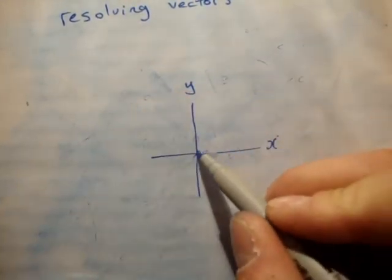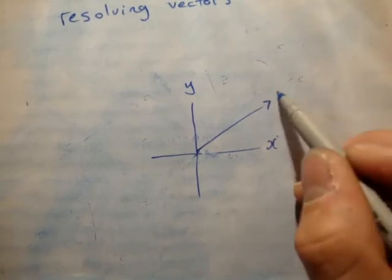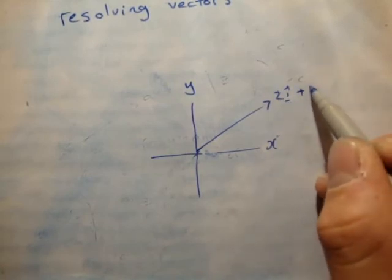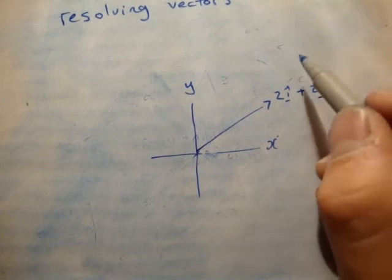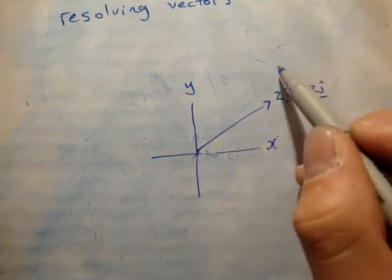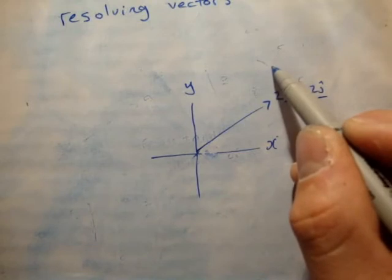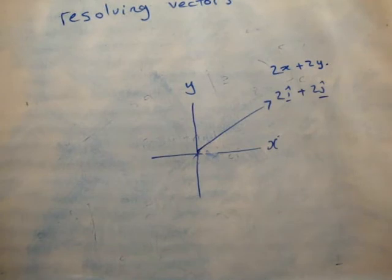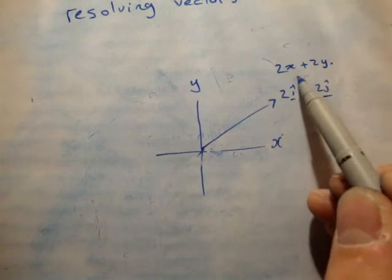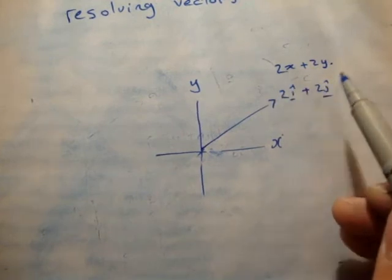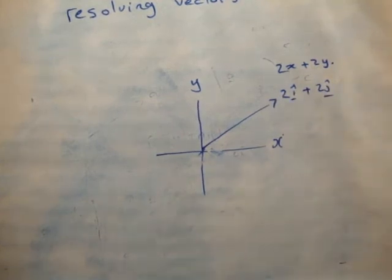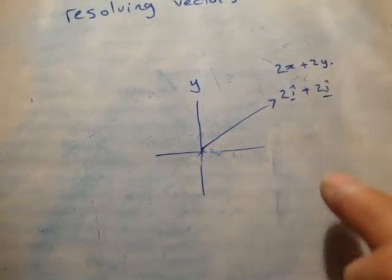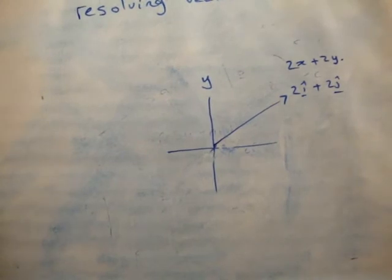I'm going to draw a random vector and say it is 2i-hat plus 2j-hat. If you haven't watched my video on unit vectors, look at it if you want — you could also write this as 2x plus 2y. Now, when you resolve your vector, you want to find out how much of it is in the X axis and how much of it is in the Y axis.